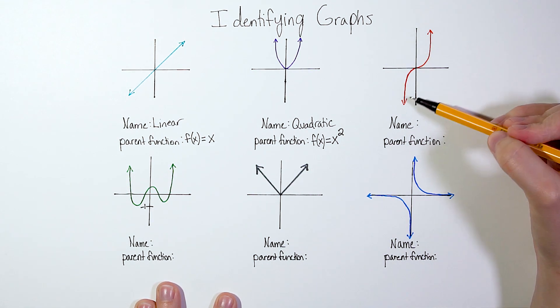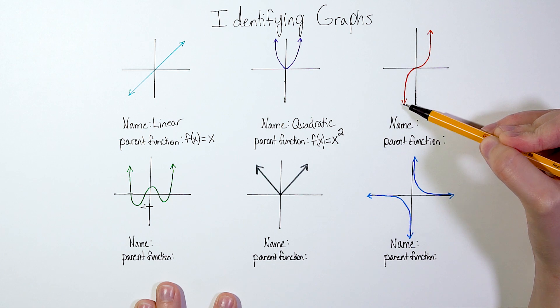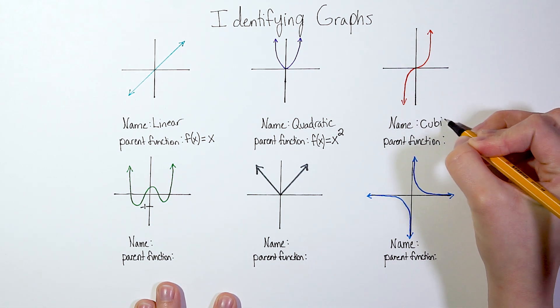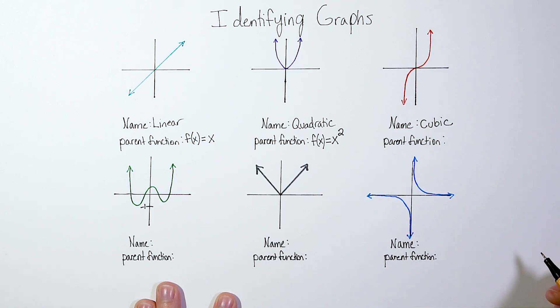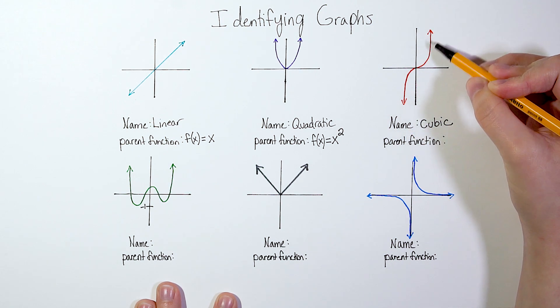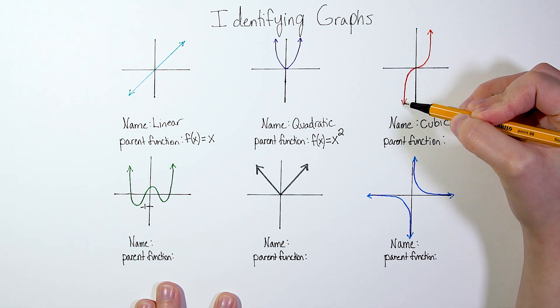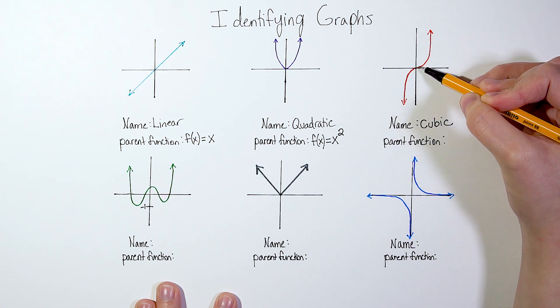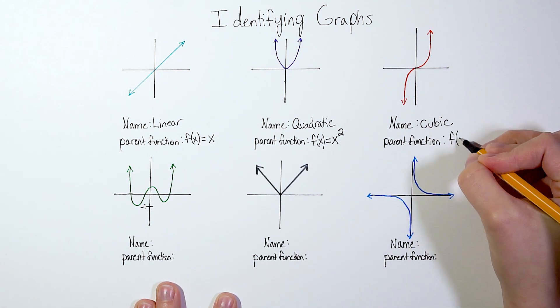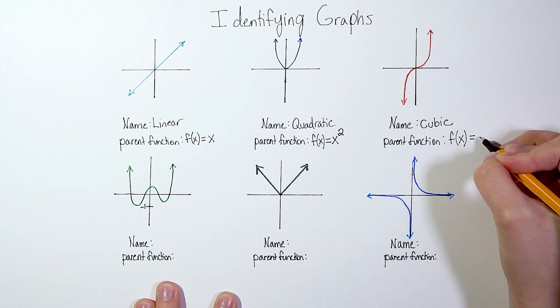This next graph over here, this red one, notice it's got kind of a curvy shape to it. This is called a cubic function. And it's really easy to spot when you're graphing. When you see that, I almost think of it, it's kind of like a backwards S sideways is how I think of it. But it's like a road curving and going straight again. And a cubic parent function would look like f(x) = x³, x to the third power.